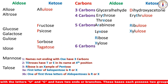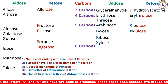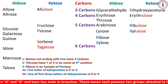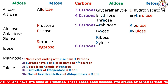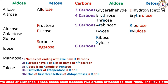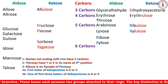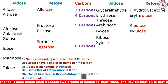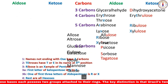For example, lyxose has X at the third position, ribose has R at the first position, and arabinose has R at the second position — these all have R or X in the first three letters, making them pentoses. All the rest of the sugars are hexoses.